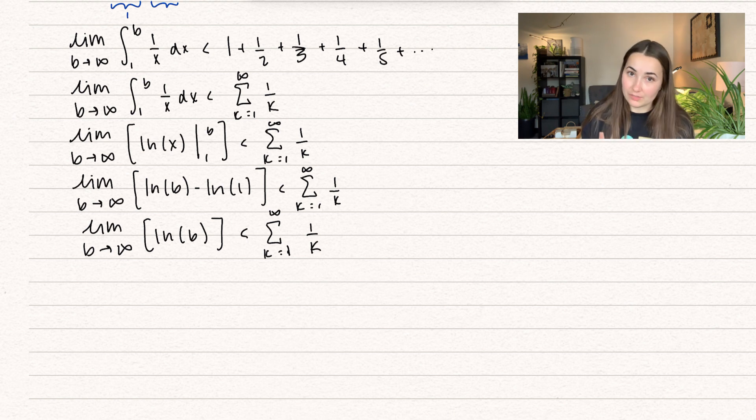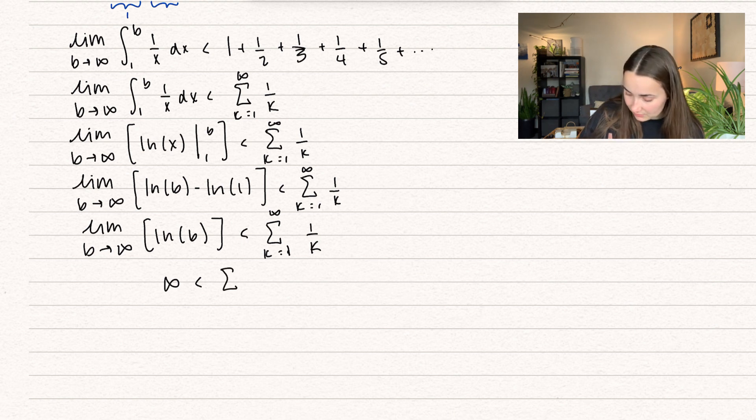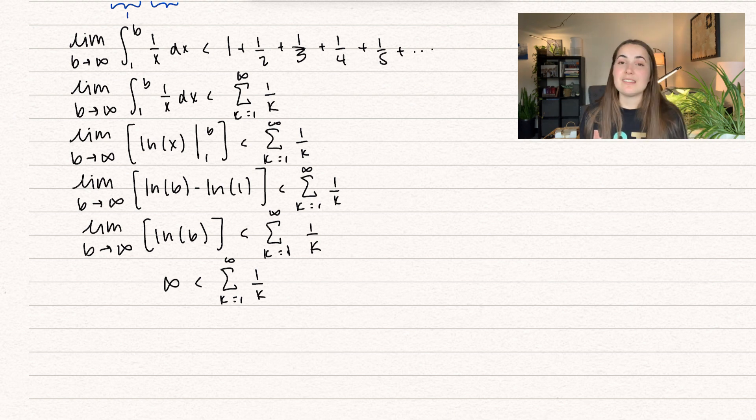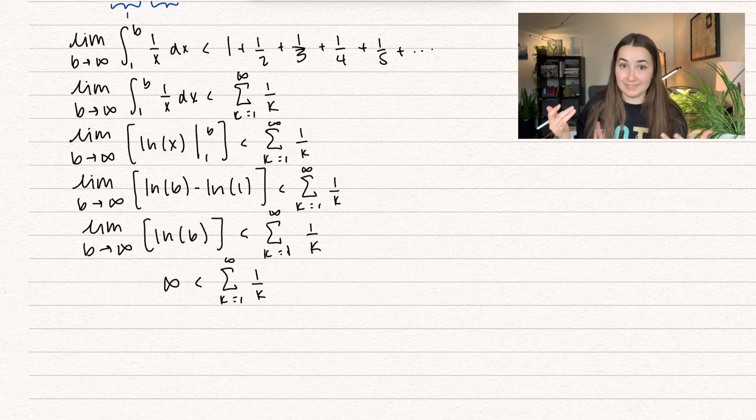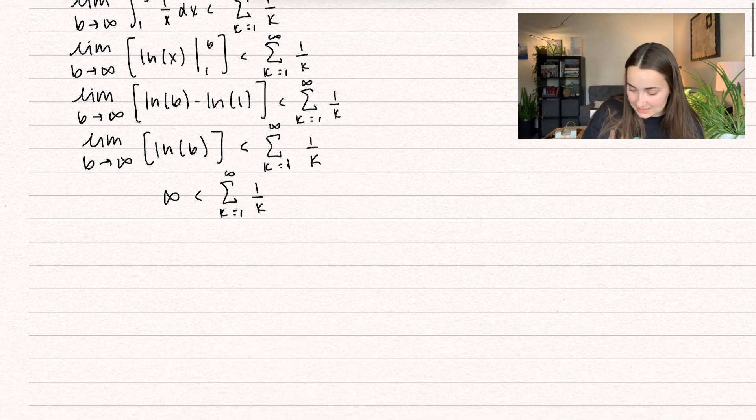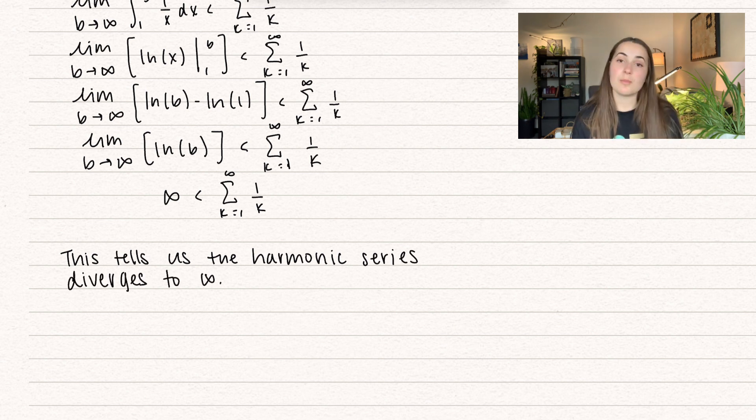What's the natural log of infinity? It's just infinity. So here we have infinity is going to be less than the summation from k equals 1 to infinity of 1 over k. So this is telling us that the harmonic series is greater than infinity, and what's greater than infinity? Infinity. So this tells us the harmonic series is going to diverge to infinity.